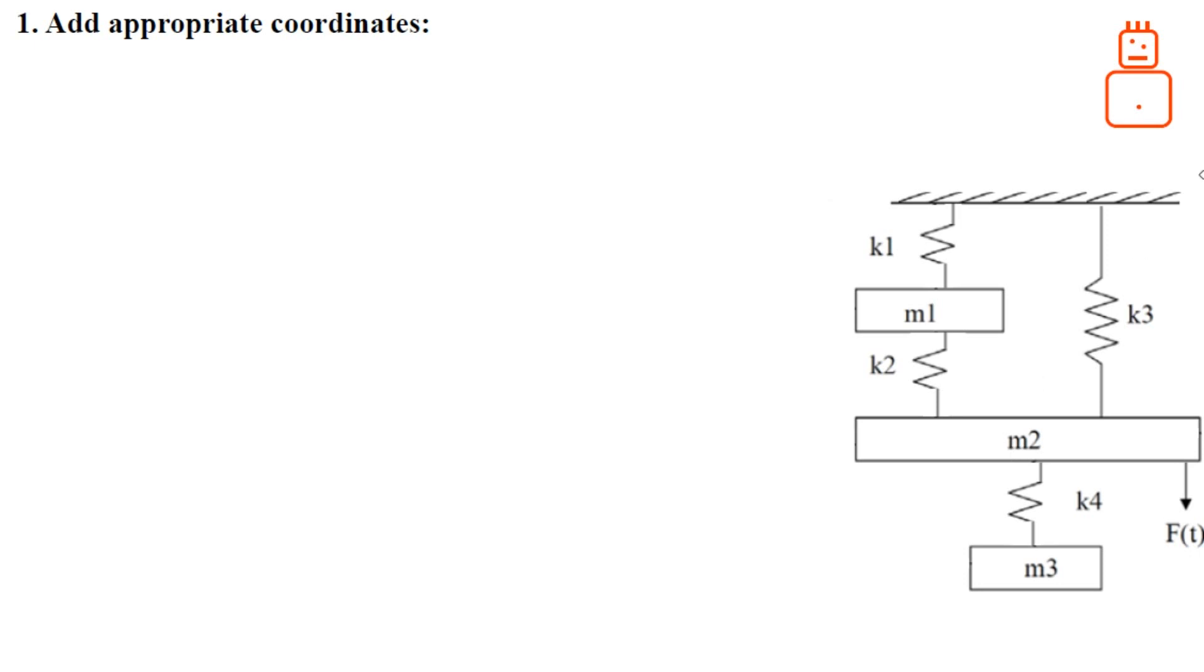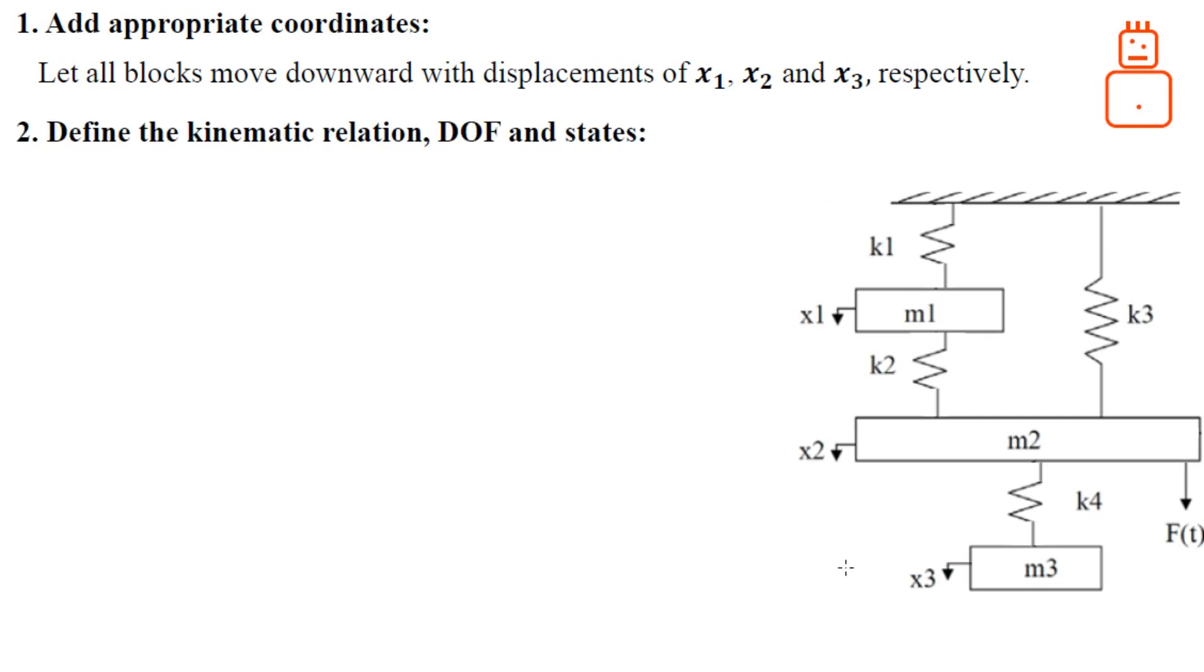The geek is confused here. We will make him happy later. Let's assume that all blocks M1 through M3 are moving downward with the corresponding displacements x1, x2, and x3.